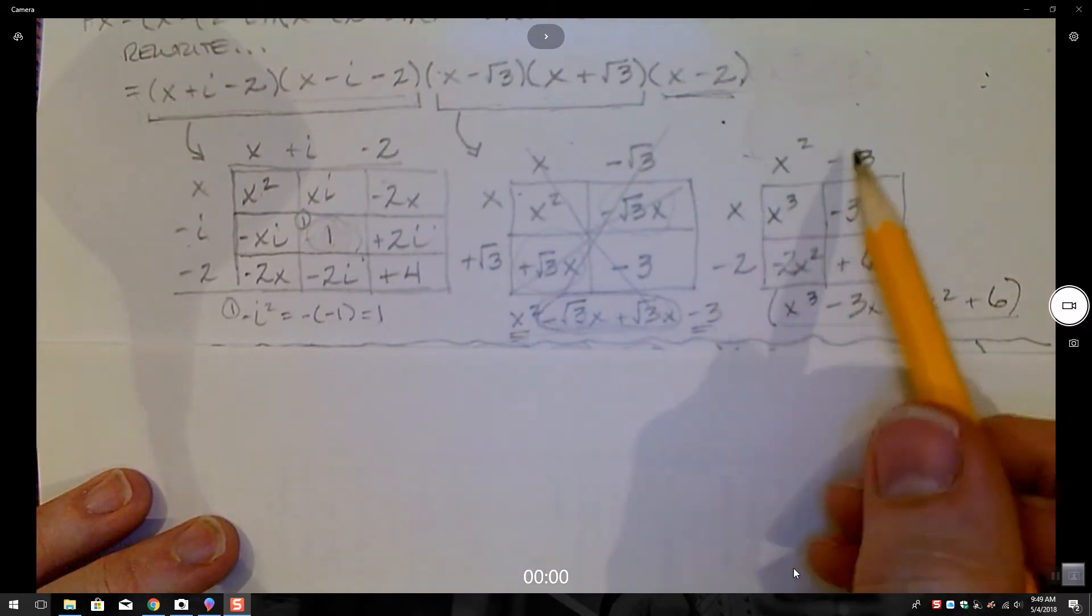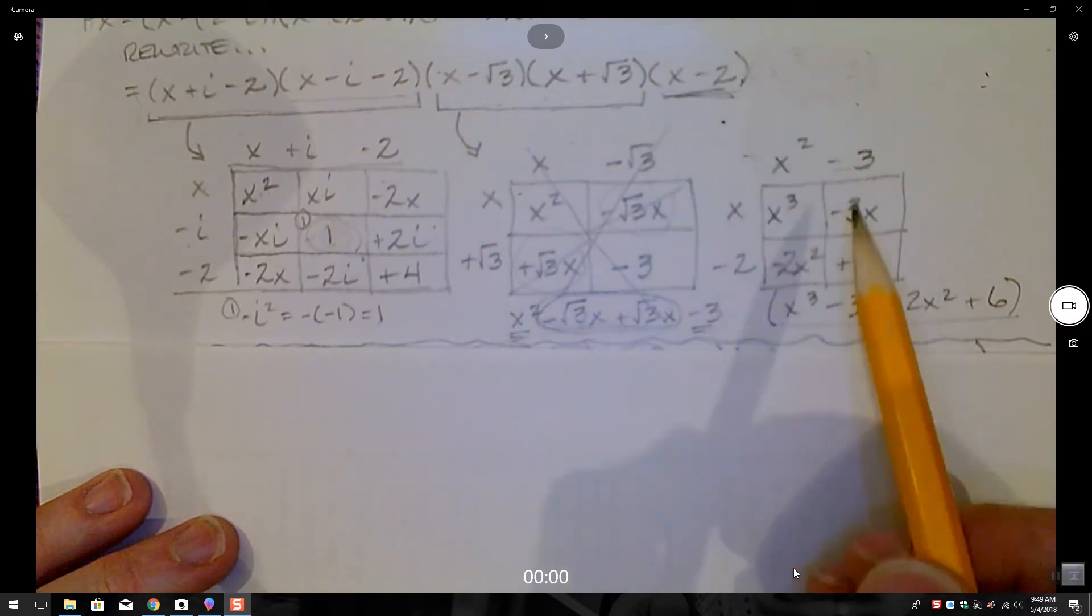And simply have an x squared minus a 3, which I multiplied with my x minus 2 term right here, and ended up with an x to the third, minus 3x minus 2x squared plus 6.